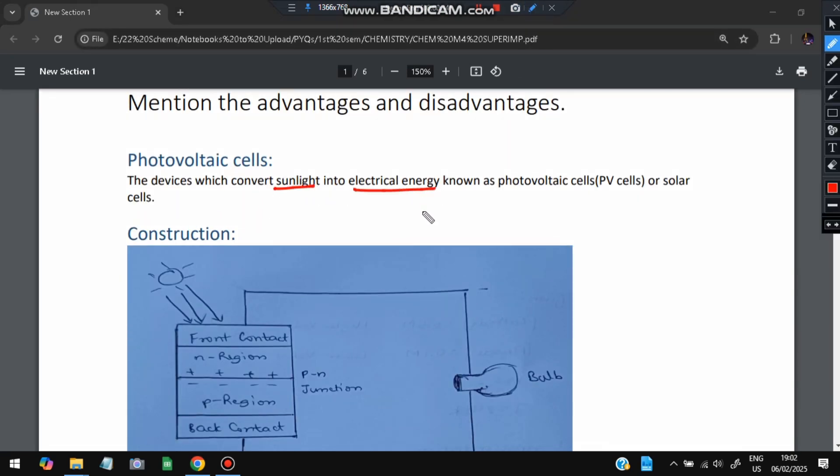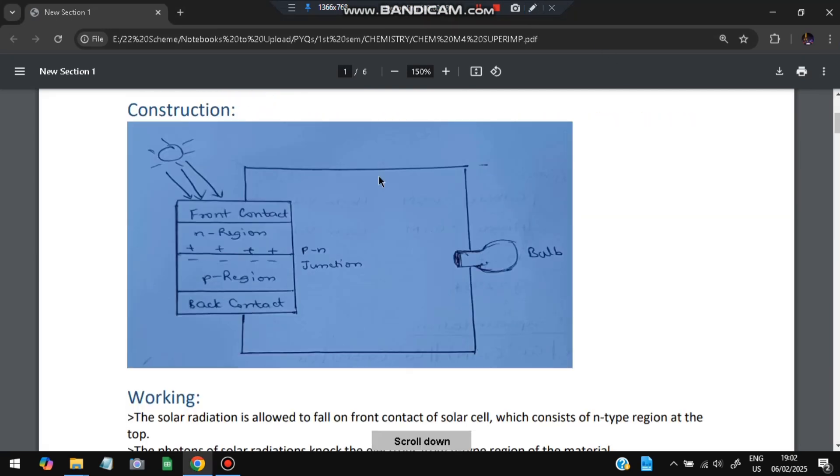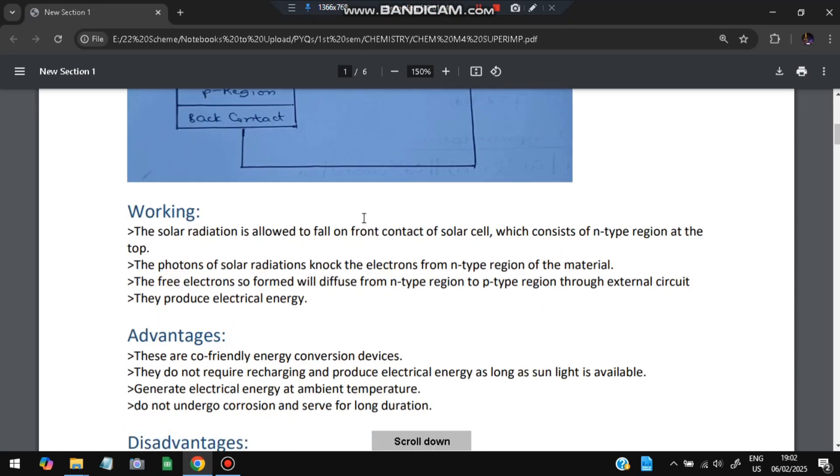Sunlight gets converted to electrical energy, that is called as photovoltaic cell. So what happens is sunlight falls on the front contact here, and this is an n region and this is a p region and this is a back contact. When sunlight falls here a chemical reaction happens, from where the positive and negative fields inside cause the electrons to get transferred. By the electron transfer electricity gets generated and the bulb gets switched on, that is the working of the photovoltaic cell.